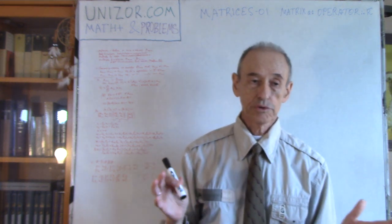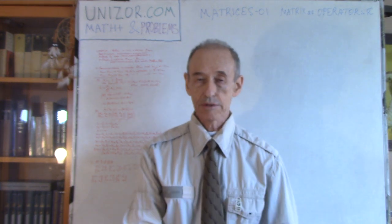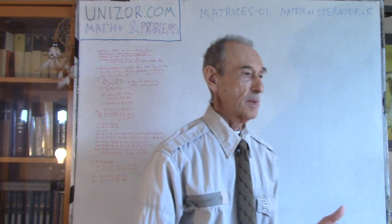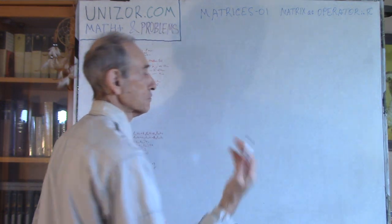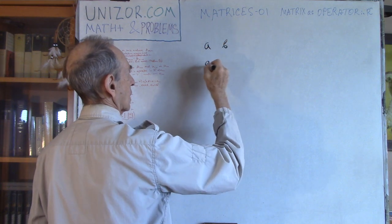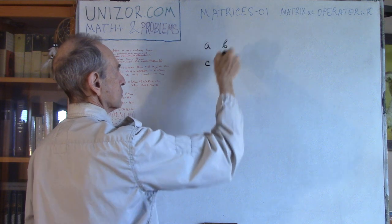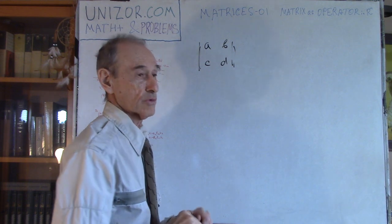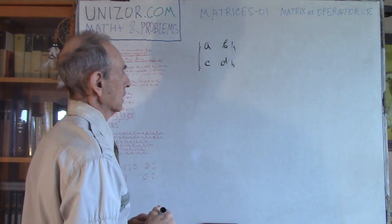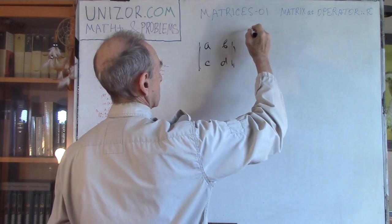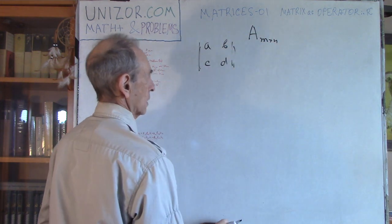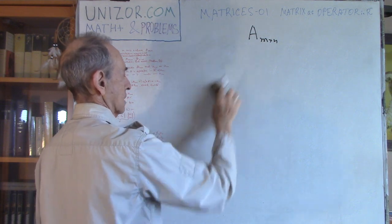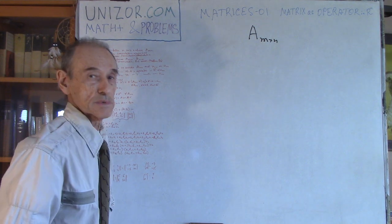First of all, you have learned from other sources what a matrix actually is, but I will just very briefly repeat it. A matrix is basically a table — a table of some numbers. This is a matrix with two rows and two columns. You can have any number of rows and any number of columns. I will use M×N to say that matrix A has M rows and N columns.